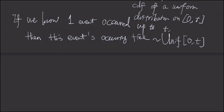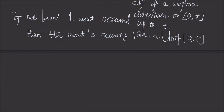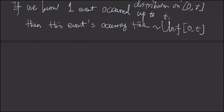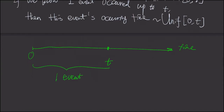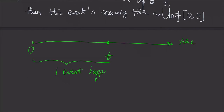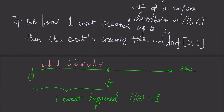In a previous video, we learned the conditional distribution of the arrival time given that one event has occurred up to t. We learned that it is uniformly distributed. To illustrate with a figure: this is the time axis, we start our clock at 0, and we know that up to time t, one event has happened. N(t) = 1. Then this event is equally likely to have happened at any time from 0 to t — this is a uniform distribution.